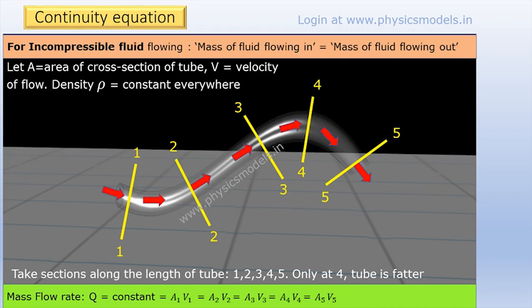The continuity equation refers to something which is continuous, and here it talks about the mass flow being continuous. So irrespective of whether a tube is straight or bent — like shown in the figure bent into an S shape — as long as the liquid cannot be compressed and there is no accumulation of mass somewhere inside the tube, the mass that is flowing in from the left hand side must be equal to the mass that's flowing out through the right hand side of the tube. The mass flow has to be continuous — it's a conservation of mass equation.